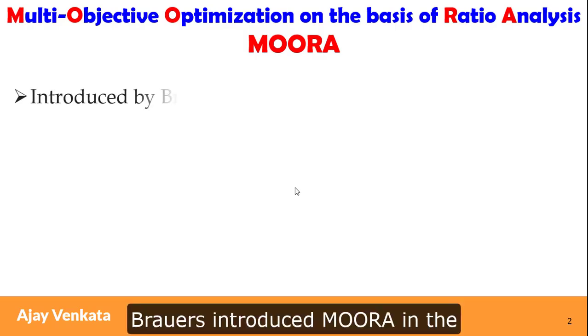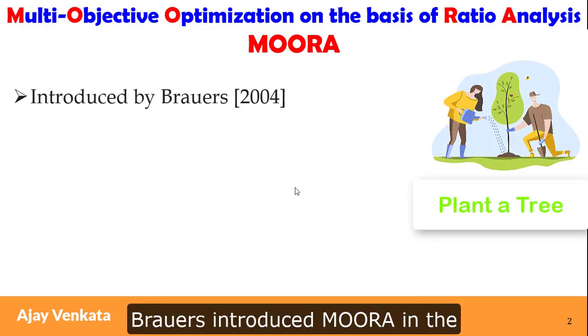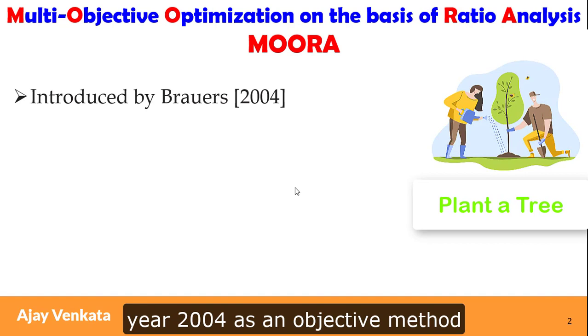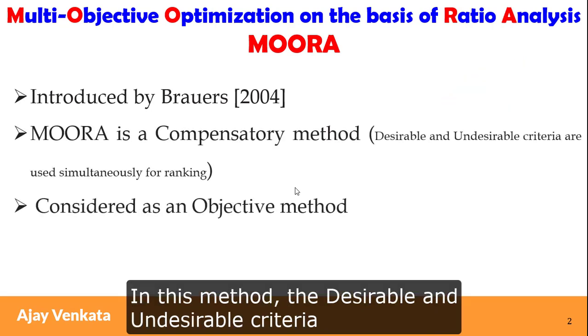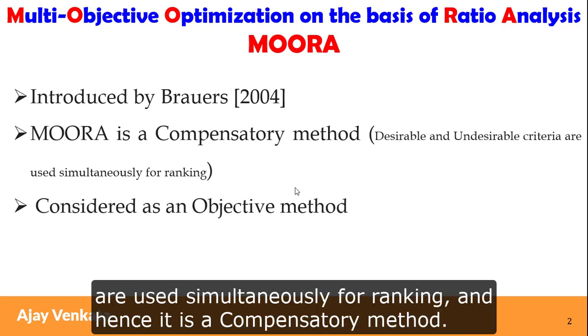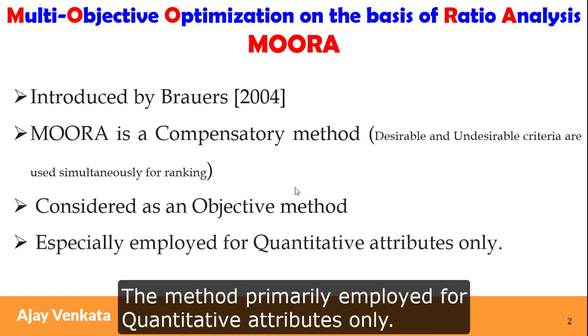Barrows introduced MOORA in the year 2004 as an objective method. In this method, desirable and undesirable criteria are used simultaneously for ranking, and hence it is a compensatory method. The method is primarily employed for quantitative attributes only.